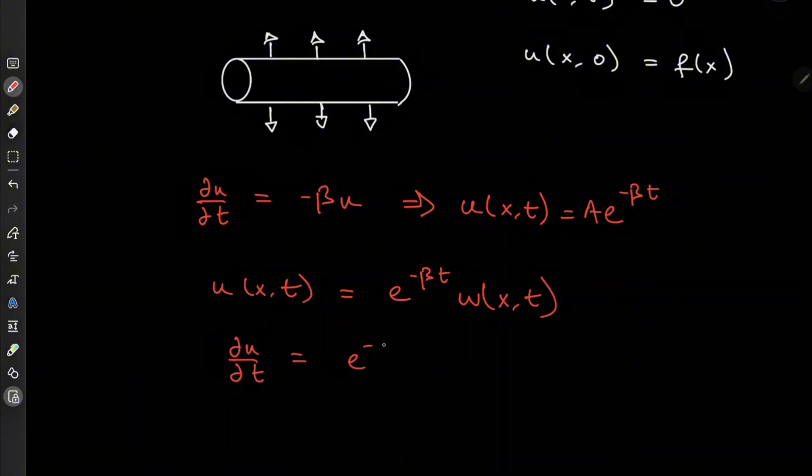in that case I have e to the minus beta t times partial w over partial t minus beta times e to the negative beta t times w of x and t.